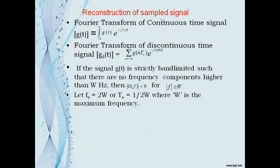Reconstruction of sampled signal: The Fourier transform of the continuous time signal G(t) is the integral from −∞ to ∞ of G(t)·e^(−j2πft) dt. The Fourier transform of the discrete time signal G_δ(t) is Σ (n = −∞ to ∞) G(nTs)·e^(−j2πfnTs).